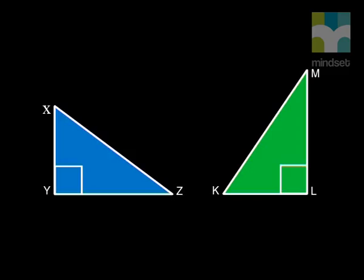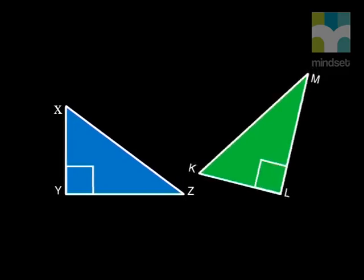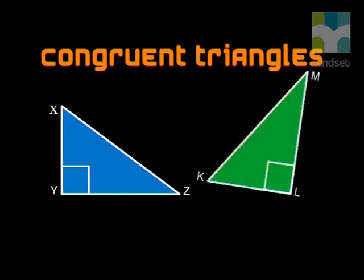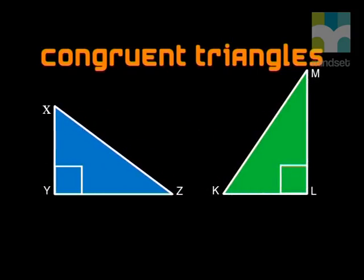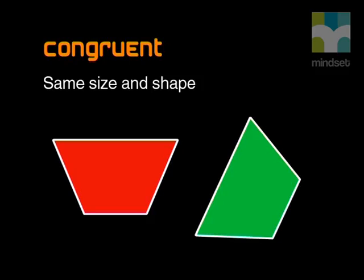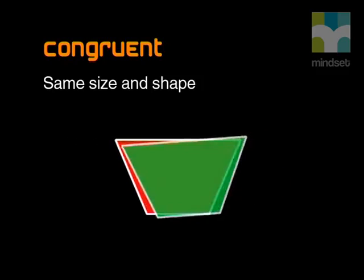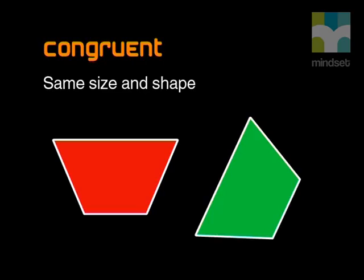You have probably come across the terms similar and congruent before, but let me remind you again. In previous grades, you worked quite often with congruent triangles such as triangle XYZ and triangle KLM here. Congruent triangles provide useful tools for proving riders, but more about that later. Any two shapes or polygons are congruent if they are exactly the same size and shape.